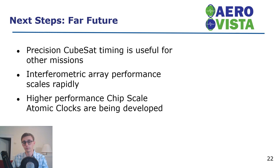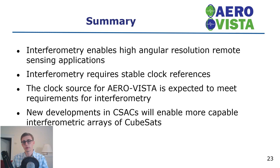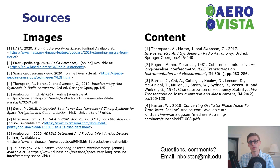In this presentation, we've talked about how interferometry can enable high angular resolution remote sensing. However, interferometry requires stable clock references. The clock source designed for AeroVista is expected to meet the requirements for interferometry, and some of those performance parameters have been verified with testing. New developments in chip scale atomic clocks will enable more capable interferometric arrays of CubeSats in the future. Feel free to email me at the address on the slide with any questions. Thank you.